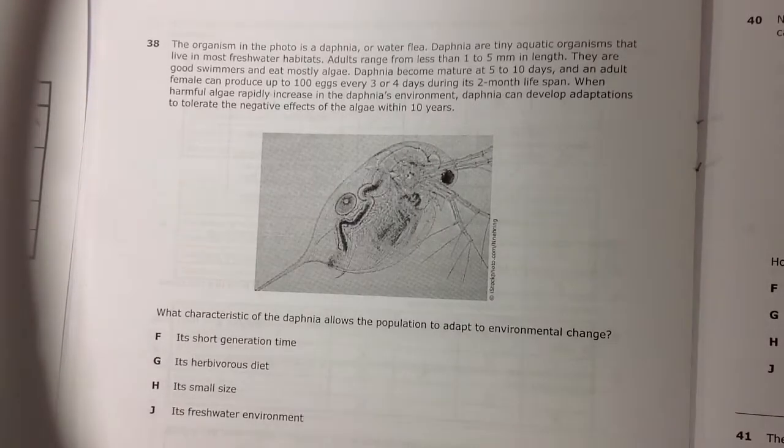Number 38. The organism in the photo is a Daphnia or a water flea. Daphnia are tiny aquatic organisms that live in mostly freshwater habitats. Adults range from less than 1 to 5 millimeters in length. They are good swimmers and eat mostly algae.